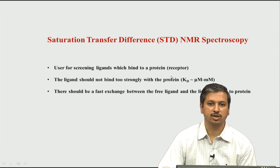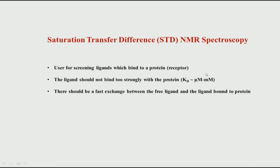STD NMR is typically used when the dissociation constant KD is in the micromolar to millimolar range. This is a weak binding — if it is strong binding, the KD value will be in the nanomolar regime. For very weak binding it will be tens or hundreds of millimolar. Our goal is to look at medium to weak binding molecules in this range.